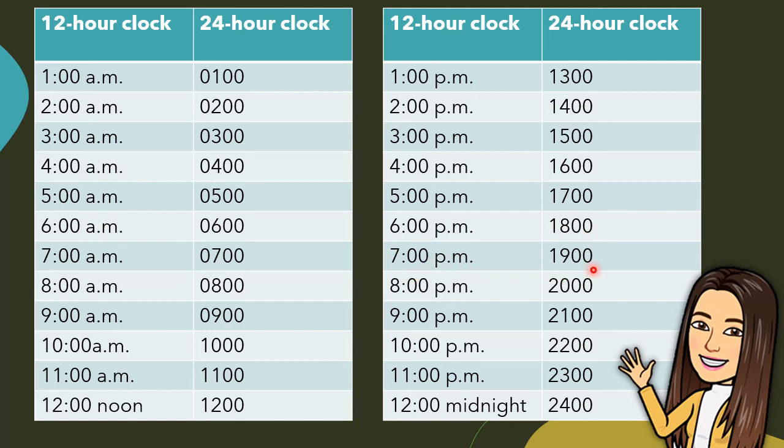7 p.m. is 1900. 8 p.m. is 2000. 9 p.m. is 2100. 10 p.m. is 2200. 11 p.m. is 2300. And 12 midnight is 2400.